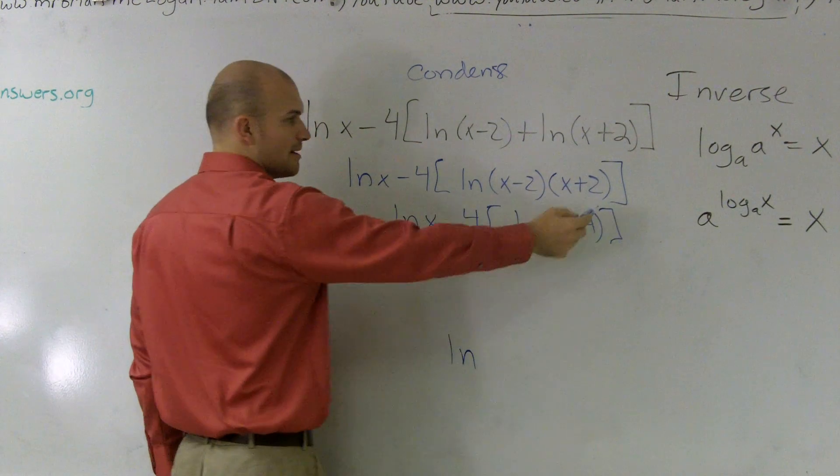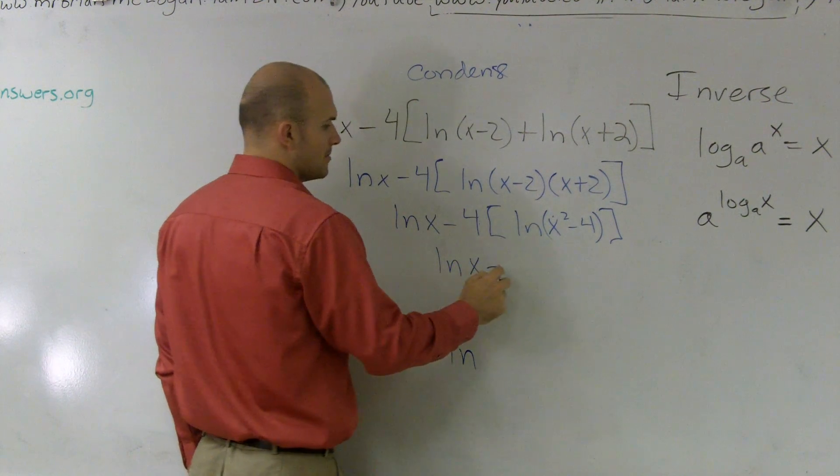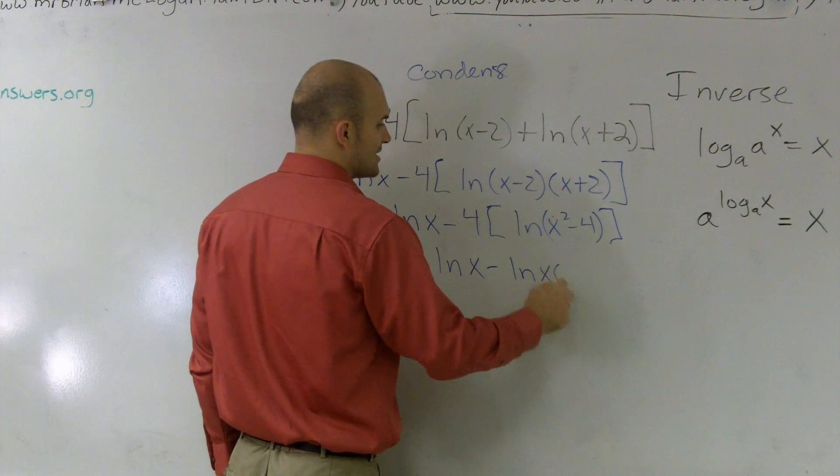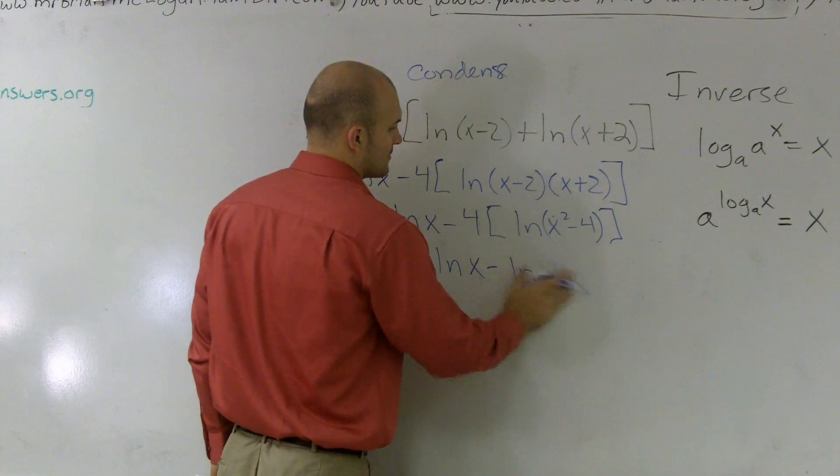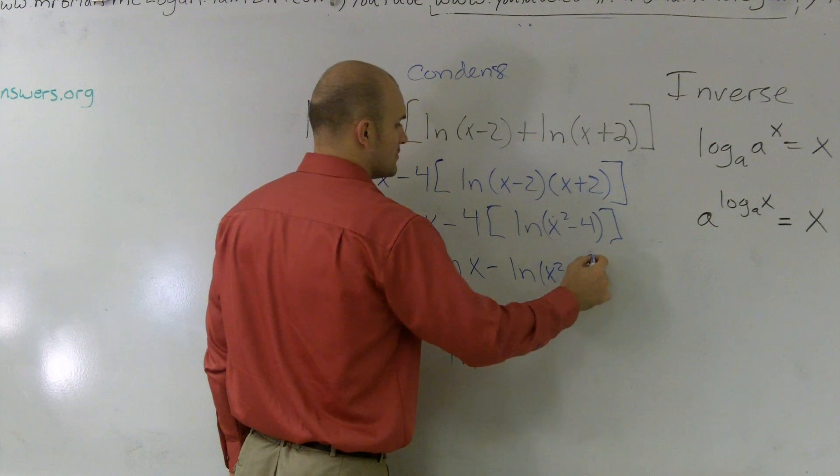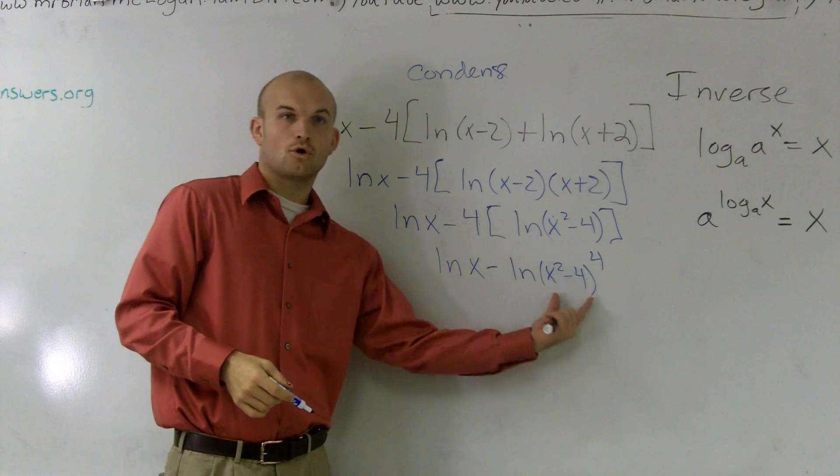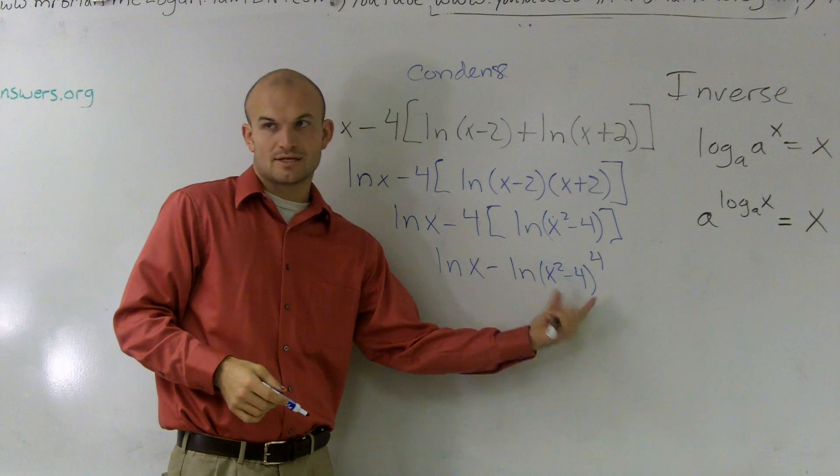Then I can take this, and this is my properties of logs. Remember, whenever you have a number in front, you can rewrite it as your exponent. Minus ln of x times (x squared minus 4) raised to the fourth. Make sure the whole term is raised to the fourth, not just the last number, the whole term.